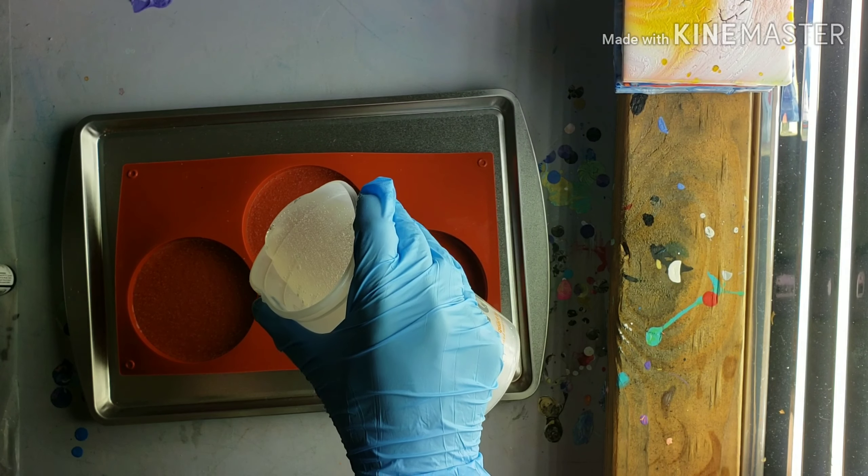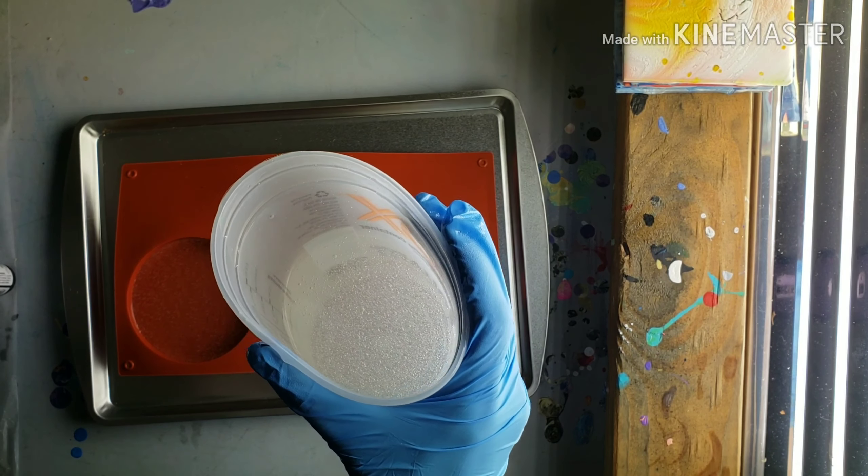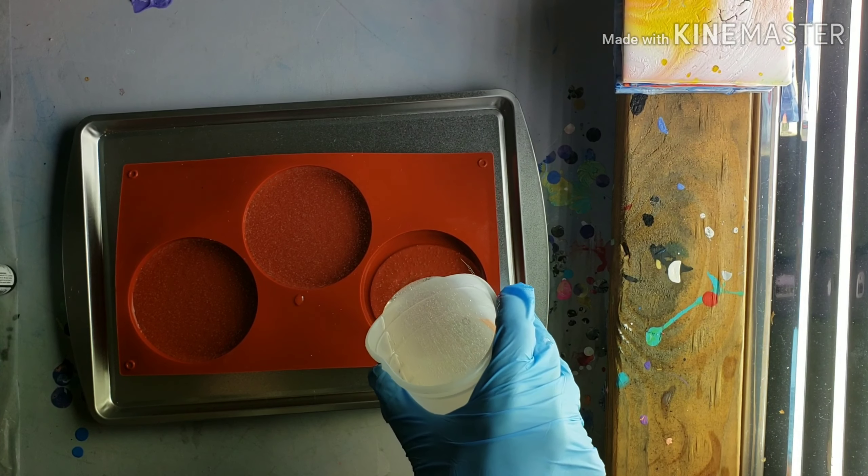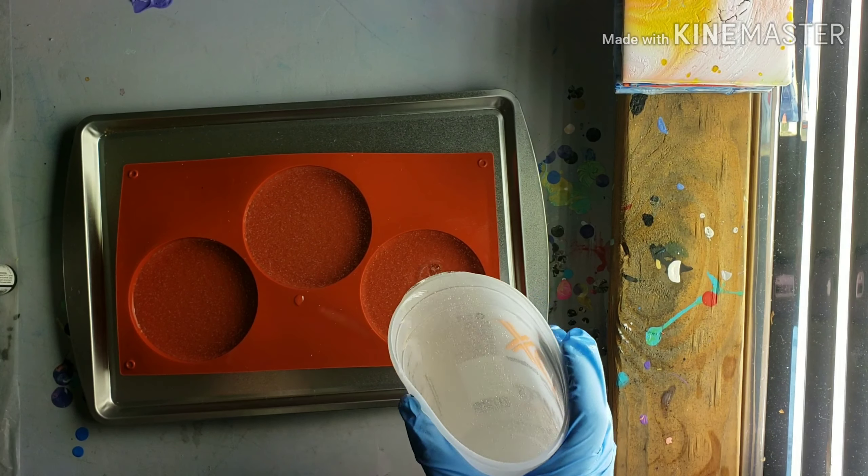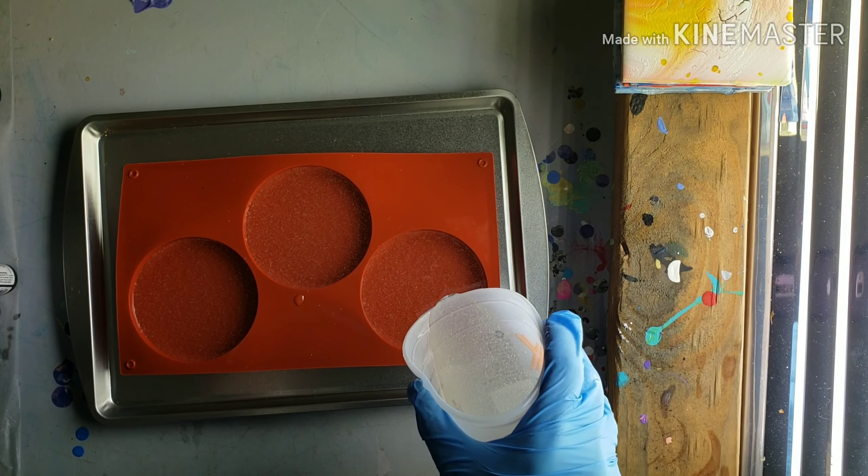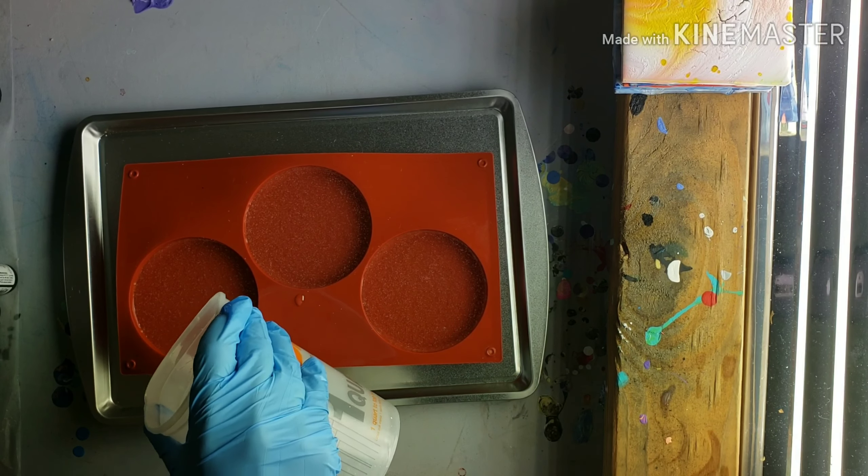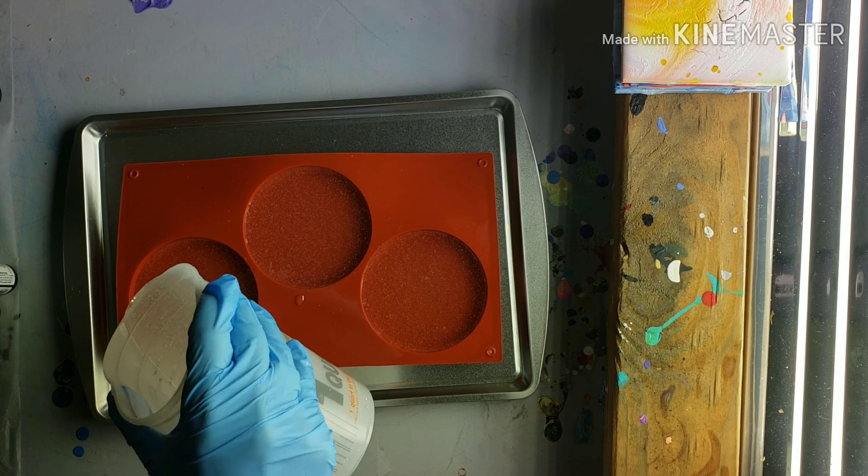And then I'm just pouring my resin into these little cavities and I'm trying to make sure that it's almost to the top but not all the way up to the top. So you can always go back and add more too. And then the bubbles, you know, they pop on their own and then we'll also hit it with the heat torch to pop all the bubbles.